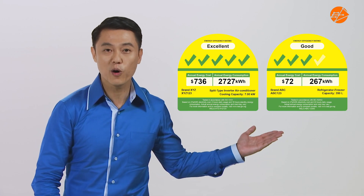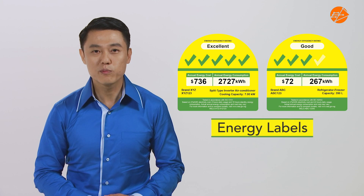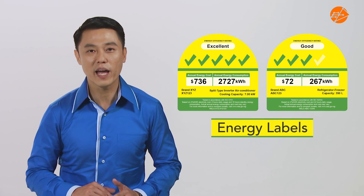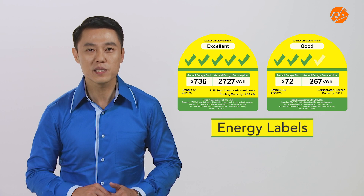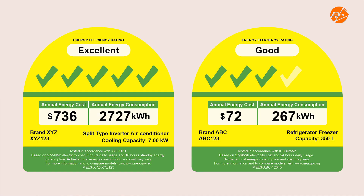Have you seen these labels before? These are energy labels issued by the National Environment Agency or NEA for household appliances such as air conditioners and refrigerators. Each label shows the estimated energy consumption and the cost of an appliance in a year. The more ticks an appliance has, the more energy and cost-efficient it is.